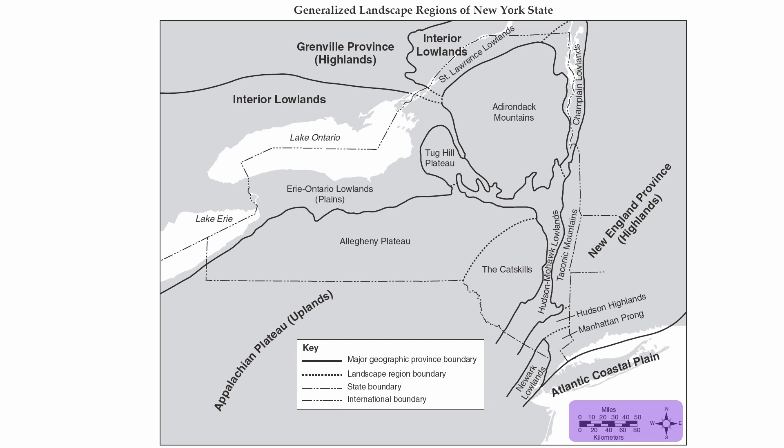The great thing about New York State is that we actually have all three types of landscape features. Up in Canada, you have some interior lowlands. You also have plains regions that are found in New York State as well. Plains have very low relief, are relatively flat, and are made up of sedimentary rock.